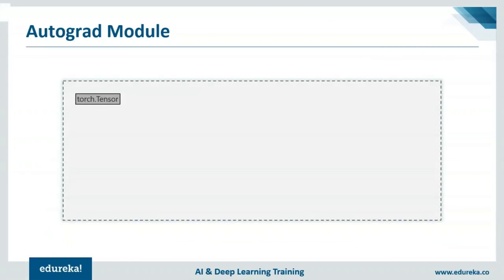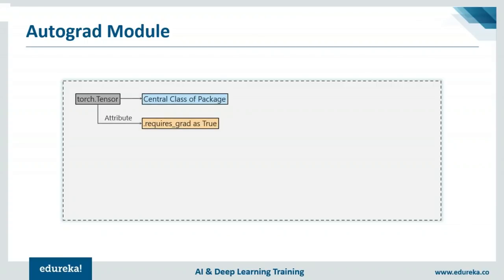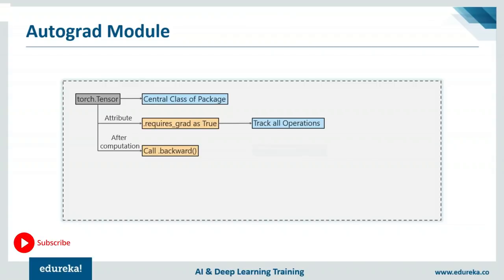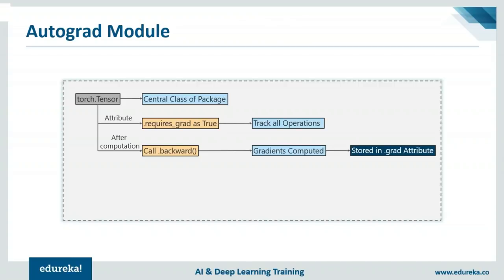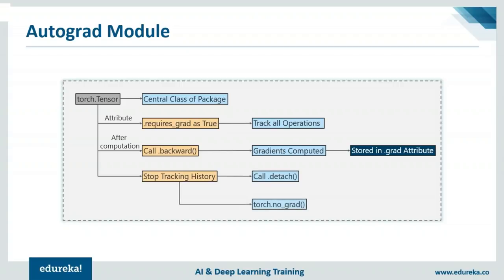torch.tensor is the central class of the package. To track all operations on a tensor, set the attribute requires_grad=True. After computation, call .backward() to compute gradients, which are stored in the .grad attribute. To stop tracking history on tensors, call the .detach() method or use torch.no_grad(). You can use either to stop tracking tensor history, but you'll need to change the flag to start tracking again.